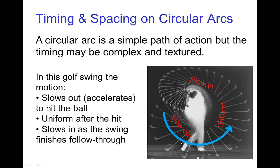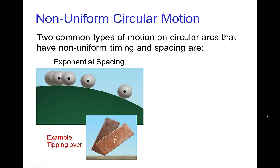First the club is slowing out as it accelerates, then more or less uniform constant speed after hitting the ball, and then finally slowing in until it comes to a stop. Although there's a lot of variety in the timing and spacing in circular arcs, there are a couple of common situations that we see all the time.